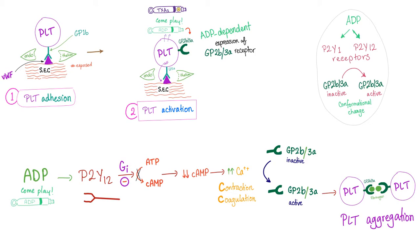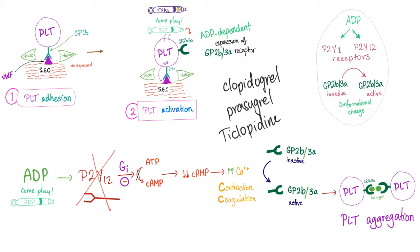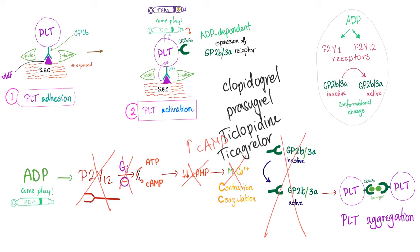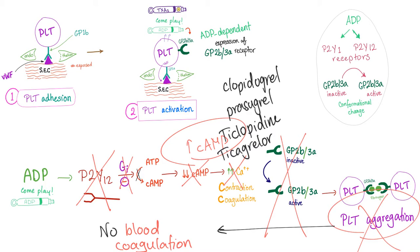ADP binds to P2Y12, which is a receptor for ADP. It's GI — I for inhibitory — and it inhibits the conversion of ATP into cyclic AMP, giving you low cyclic AMP. More calcium allows you to convert GP2B3A from its inactive form into the active form, producing platelet aggregation. When you add P2Y12 inhibitors such as clopidogrel, prasugrel, ticlopidine, and ticagrelor, you block this pathway. No GI activation means no decrease in cyclic AMP — in fact, cyclic AMP increases, calcium decreases, GP2B3A stays inactive, and there is no platelet aggregation.